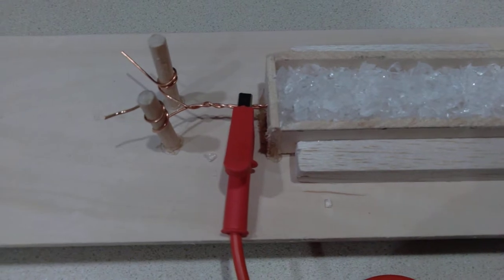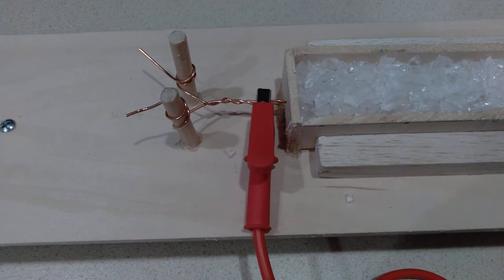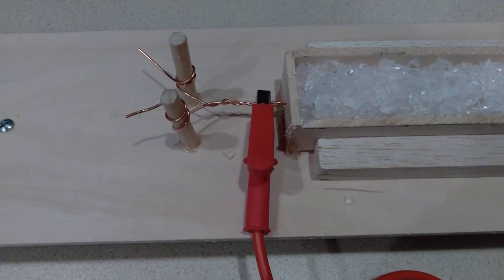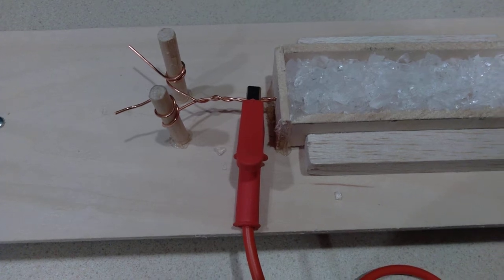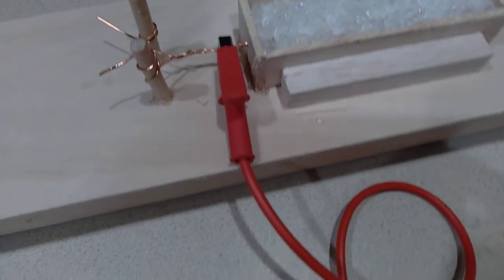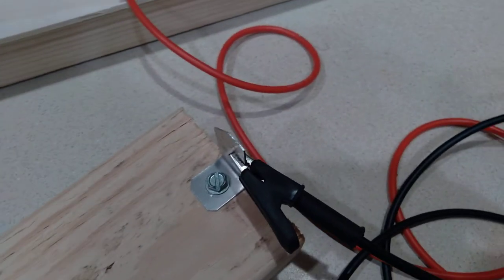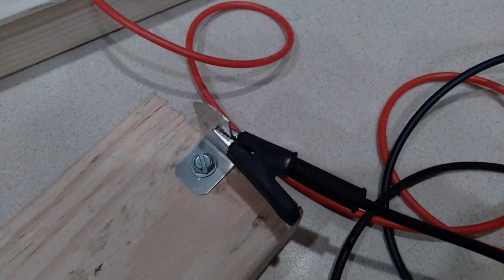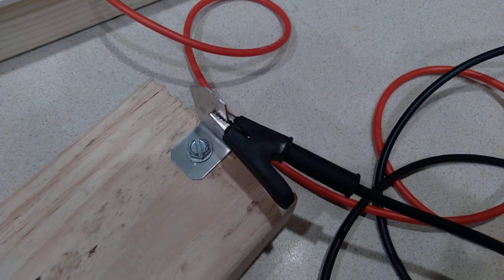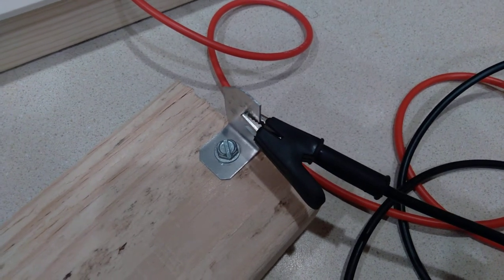There's the positive probe from the multimeter on the combined wire. And over here we have a piece of aluminum and the negative probe from the multimeter is connected to it. I'll call it the ground.